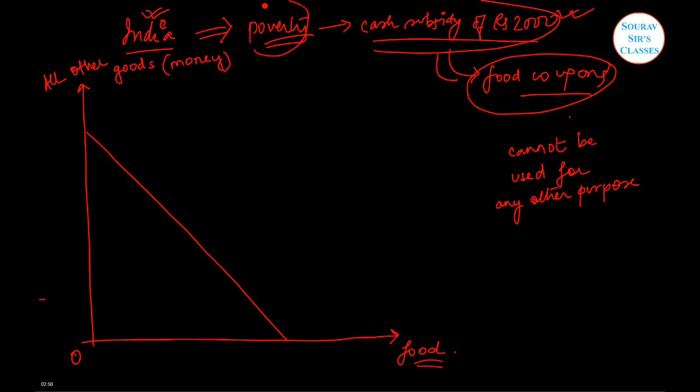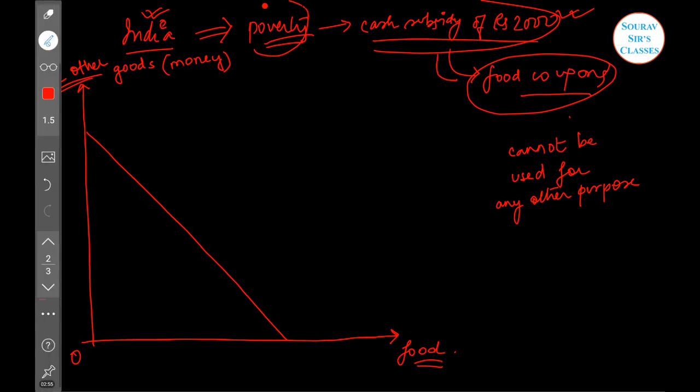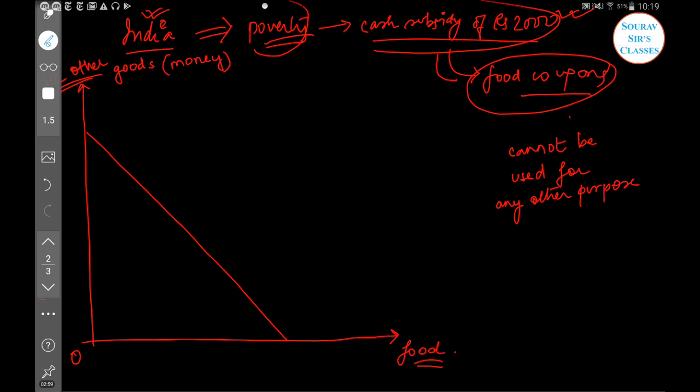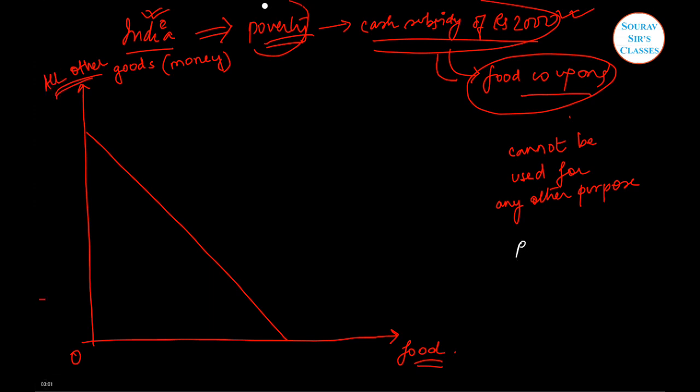If you want to have something more, you have to give up the other commodity. So it will be downward sloping following this logic. Now we have received rupees 2000 as a cash subsidy which we will utilize to buy the food coupons.